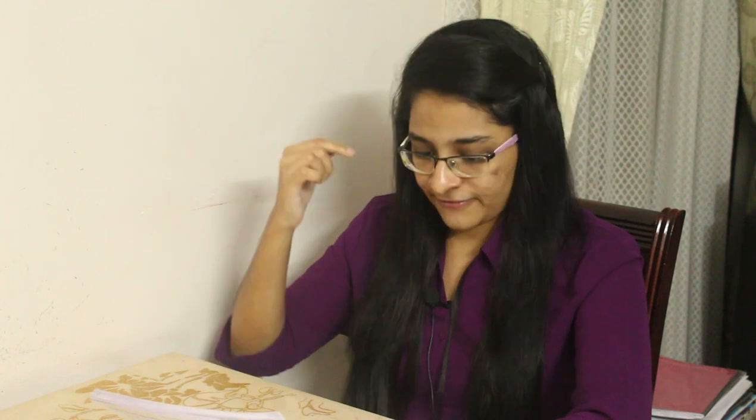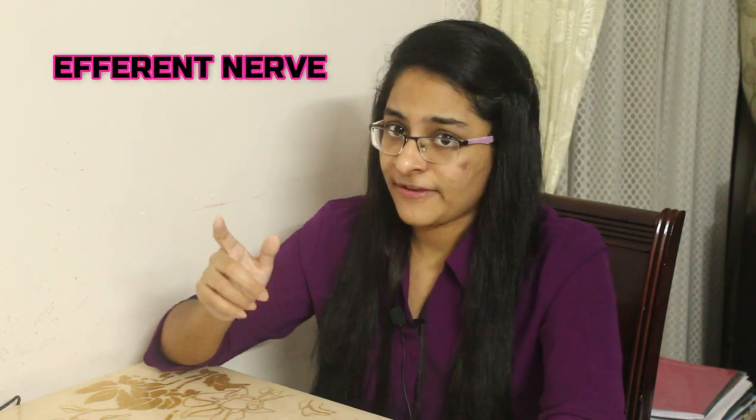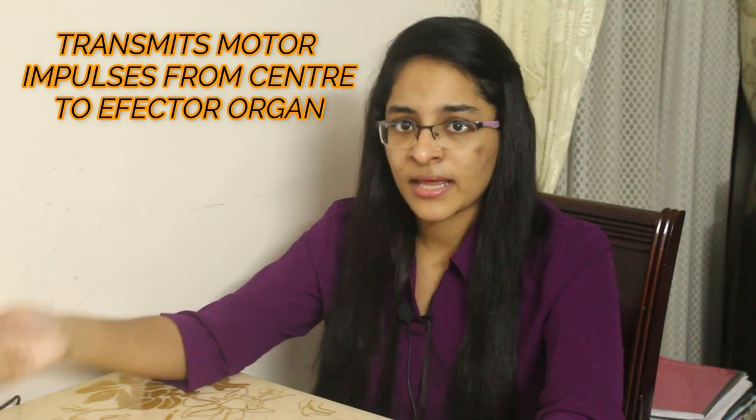The third component of the reflex arc is the center. It receives the sensory impulses and in turn generates appropriate motor impulses. It is located in the brain or the spinal cord. The fourth component is the efferent nerve — the efferent or motor nerve transmits motor impulses from the center to the effector organ, such as pulling away our hand from the hot object. The fifth component is the effector organ — a structure such as a muscle or a gland where the activity occurs in response to a stimulus.